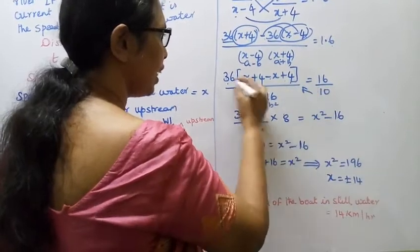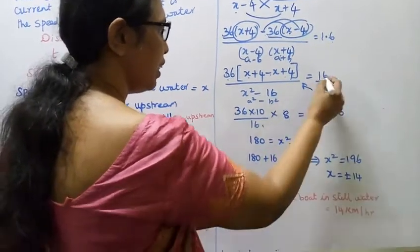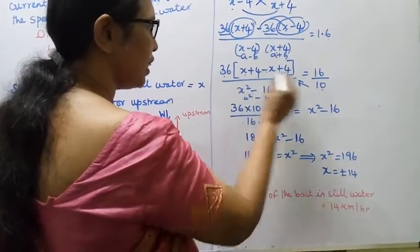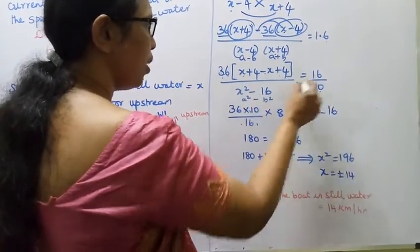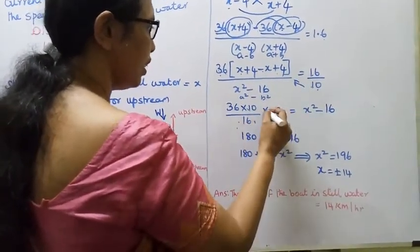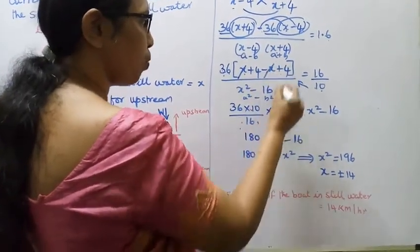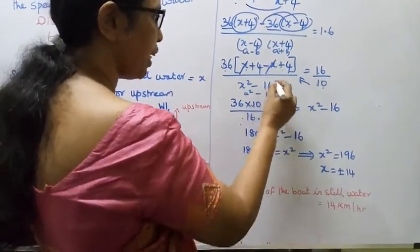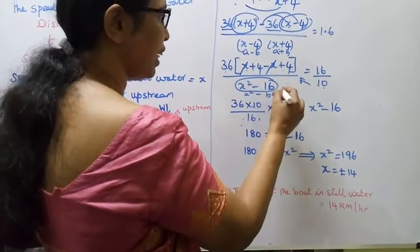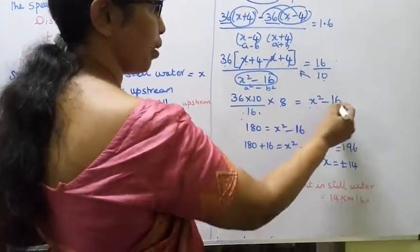36 into 10 divided by 16. Plus x and minus x will cancel. 4 plus 4 is 8. So 36 times 10 times 8 divided by 16 equals x squared minus 16.